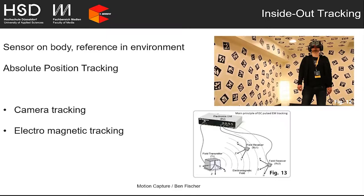Inside-out tracking is when the sensor is placed on the body and the reference is in the environment, allowing absolute position tracking relative to the surrounding area. An example is camera tracking, where the camera on the body searches for trackable references in the environment like markers or high-contrast points — giving quite precise tracking, but it weighs a lot, requires computational power, and has occlusion problems. Electromagnetic tracking is another example: cheap and precise, but problematic with fast movements or metal in the scene.